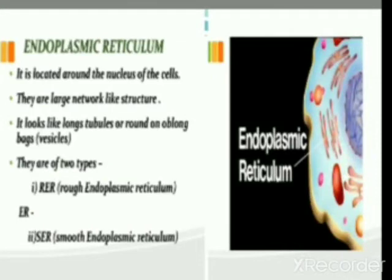Endo means inside, plasmic means related to cytoplasm, and reticulum means network. A network is not single but interconnected — anything which is interconnected we call it a network. So we can define endoplasmic reticulum as a network of something that is present inside the cytoplasm.